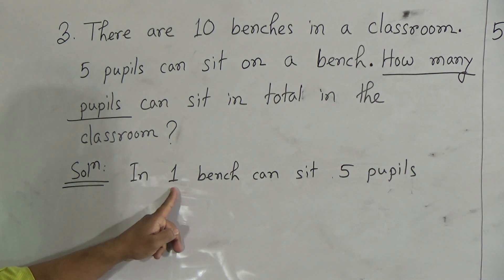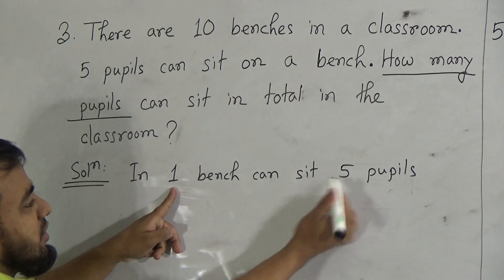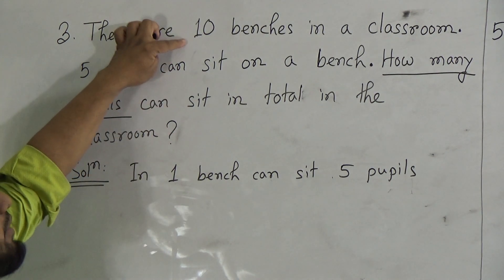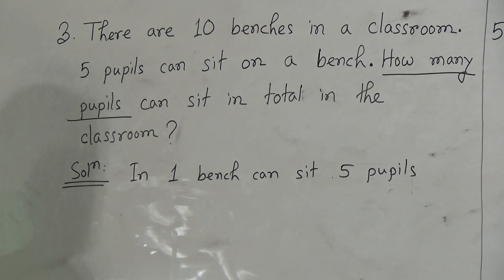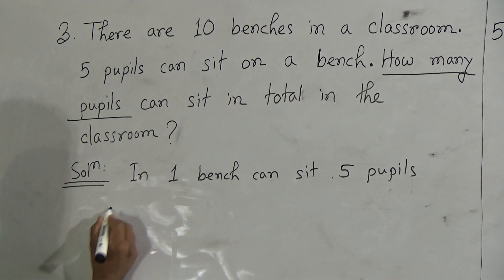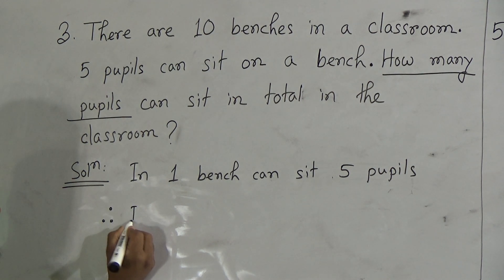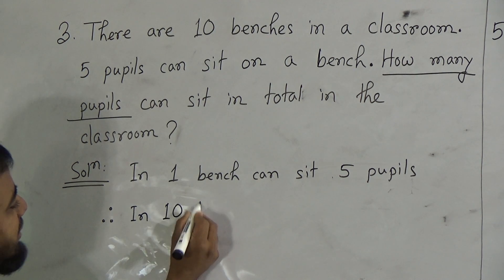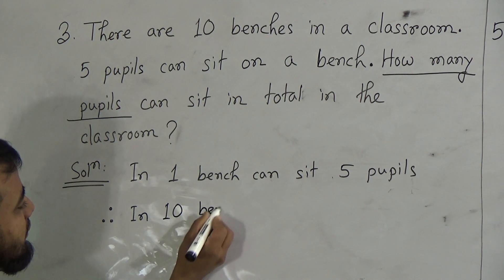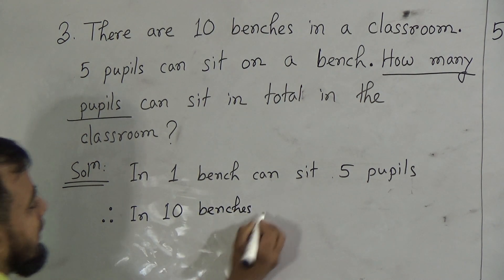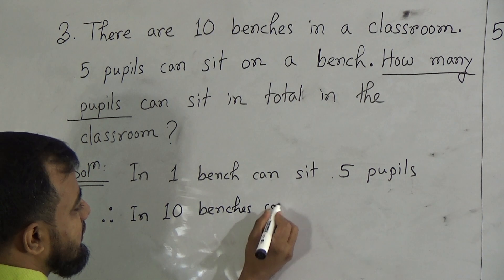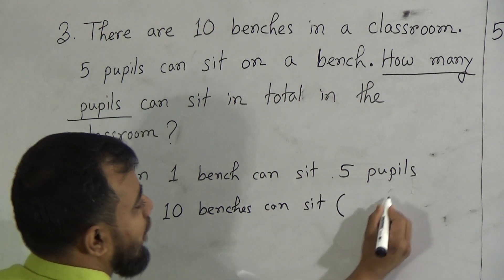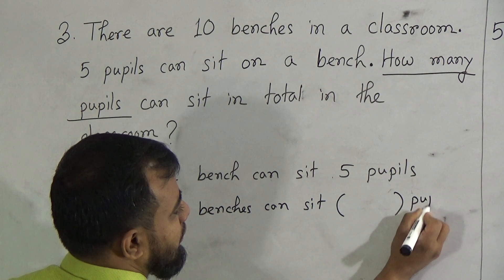Now, in one bench five people can sit. So we will find out: in 10 benches, how many people can sit? So you should write down: 'Therefore, in 10 benches can sit ___ people.' We need to do the operation here.